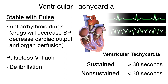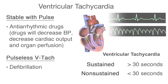Patients with VTAC may have a pulse, or they may be pulseless. The standard of care for pulseless VTAC is defibrillation, to immediately convert the VTAC to sinus rhythm and reestablish cardiac output and organ perfusion. If the patient is stable with adequate cardiac output, they generally receive antiarrhythmic drugs. All drugs used to treat VTAC decrease blood pressure, so if the patient has an unstable low blood pressure, the drug would further decrease cardiac output and organ perfusion.